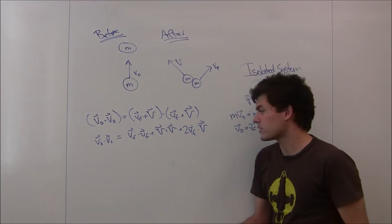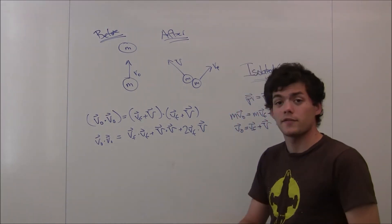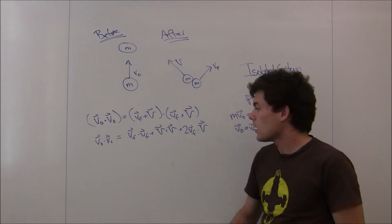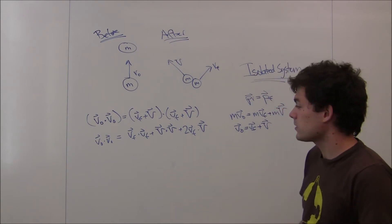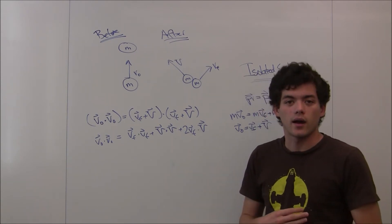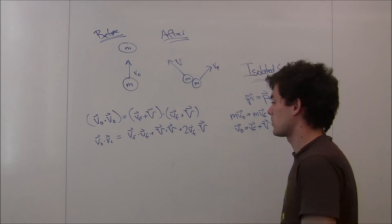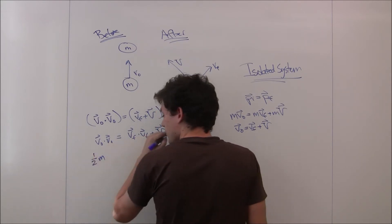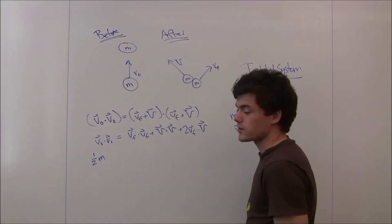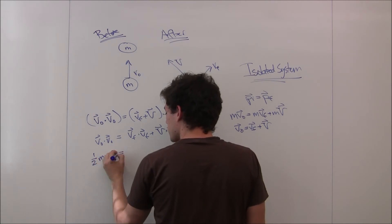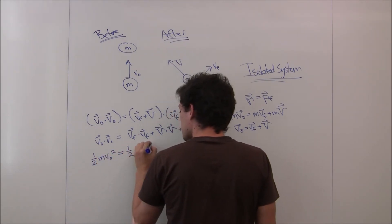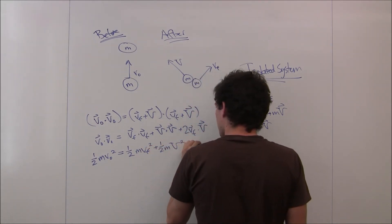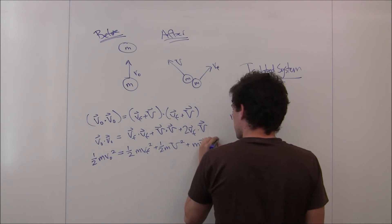Now, if you remember when we were talking about dot products, the dot product of a vector with itself is actually just going to be the magnitude of that vector squared. And so we can substitute that in. And I'm actually also going to multiply by 1 over 2 times m. And the reason for that is going to become apparent pretty quickly. So 1 over 2m times the magnitude of velocity is just the speed. So the speed v0 squared equals 1 over 2m v final squared plus 1 over 2m big V squared plus mv final dotted with big V.